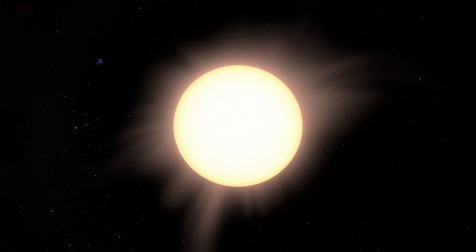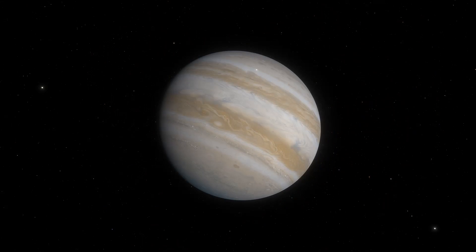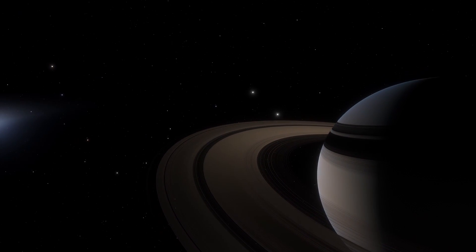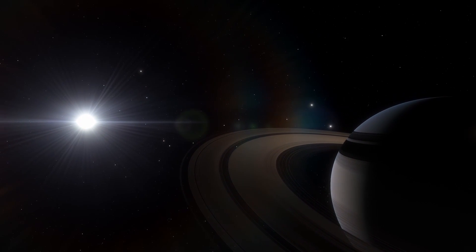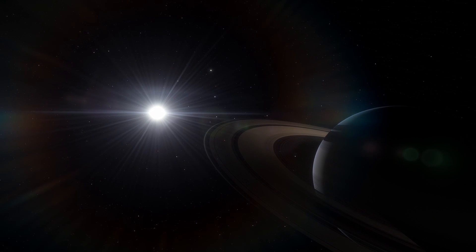This makes the sun rounder than any other body in the solar system, rounder than Jupiter, Saturn, and far rounder than the earth. Yet in spite of this, it still pales in comparison to that of a neutron star.